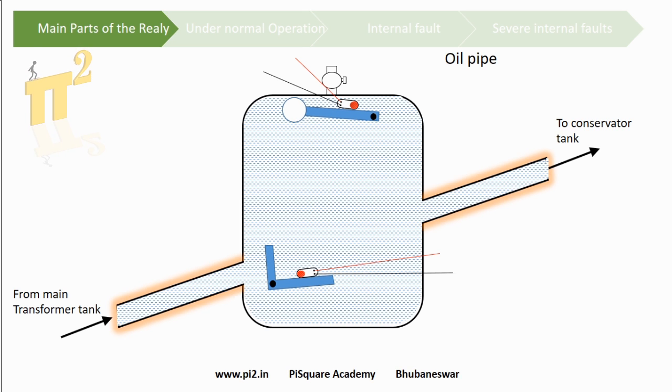We have an oil pipe connecting the main transformer and the conservator tank. Inside is the relay chamber and a test cock to collect gas samples. These collected gas samples can be tested, which helps in identifying the type of fault.